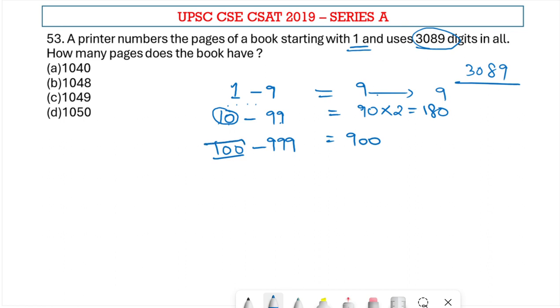And for each number, three digits are being printed. So into 3. This will give us 2700. Adding these up, we get 2889. So these are the number of digits that has been printed from 1 to 999.